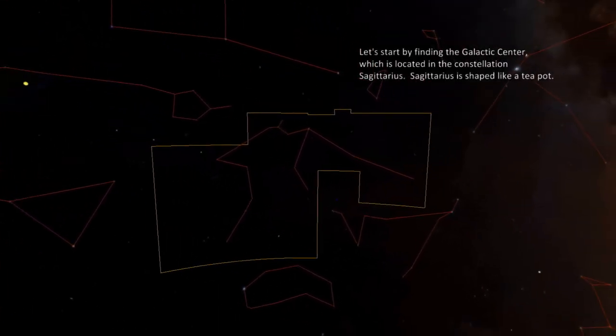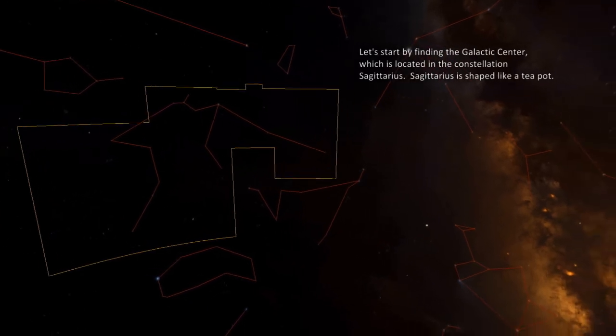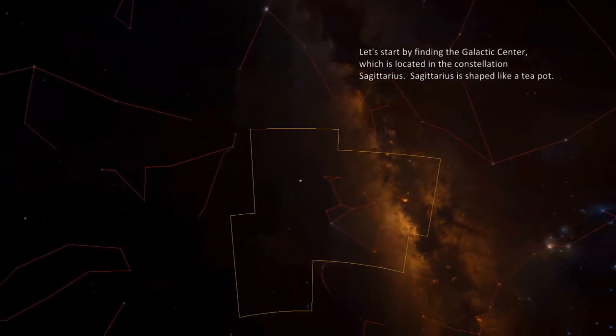Let's start by finding the galactic center, which is located in the constellation Sagittarius. Sagittarius is shaped like a teapot.